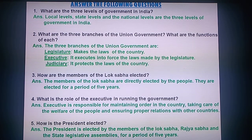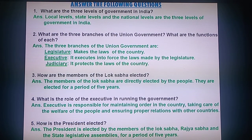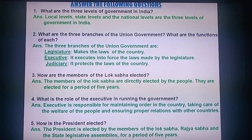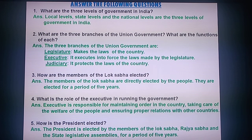Question 2: What are the three branches of Union Government and the functions of each? The three branches are: Legislature — it makes the laws of the country; Executive — it executes and puts into force the laws made by the legislature; and Judiciary — it protects the laws of the country.